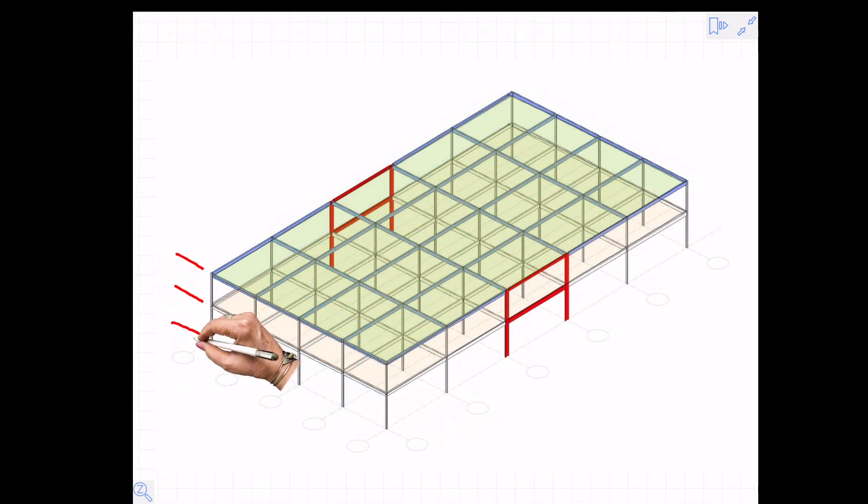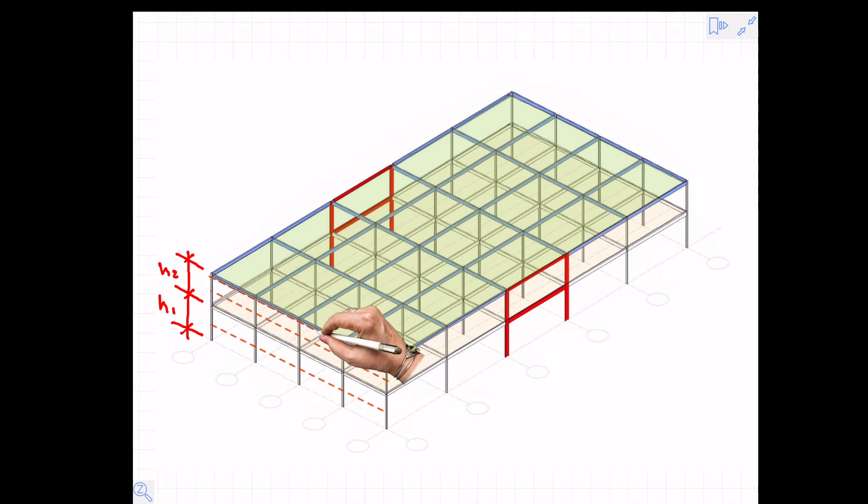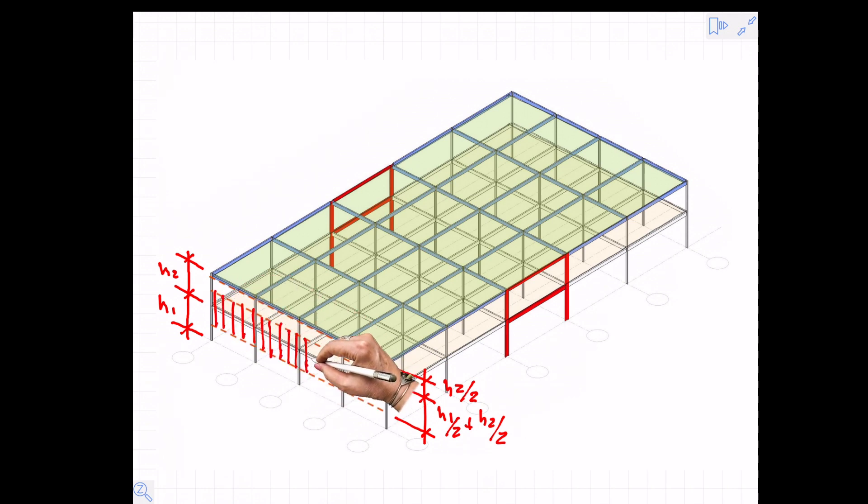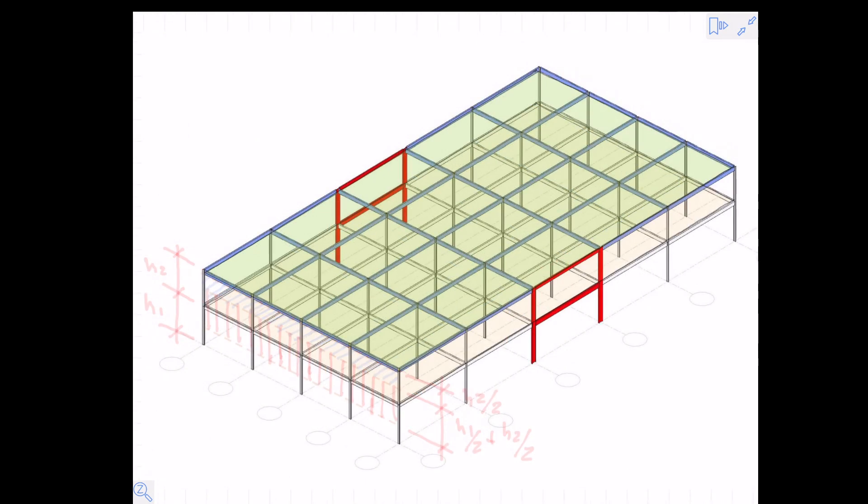That load is being distributed by tributary height in the way that beams receive load by tributary width, so we divide half the distance between the foundation and the first floor and half the distance between the first floor and second floor. The shaded area here is the total height that the load is being supported on the second floor and the blue shaded area here is the total height that's being supported by the roof level.